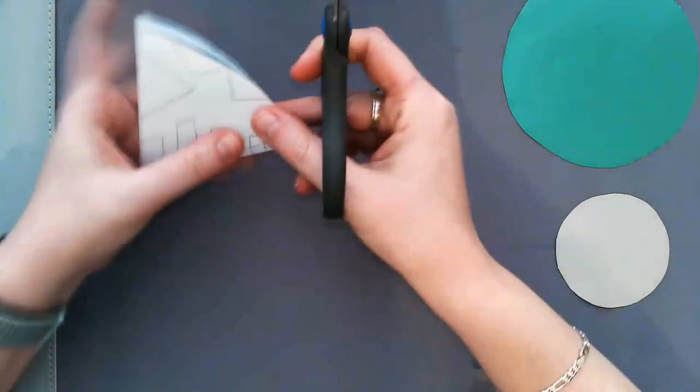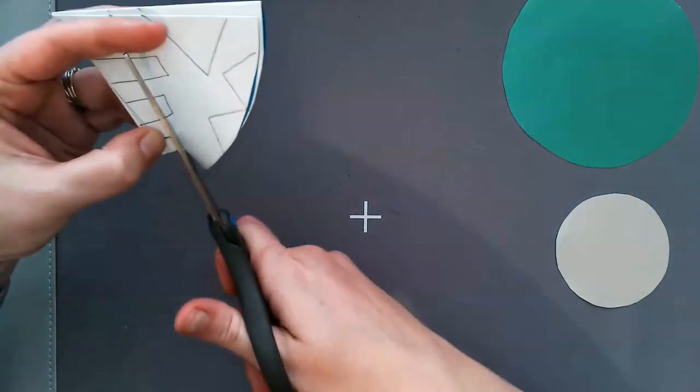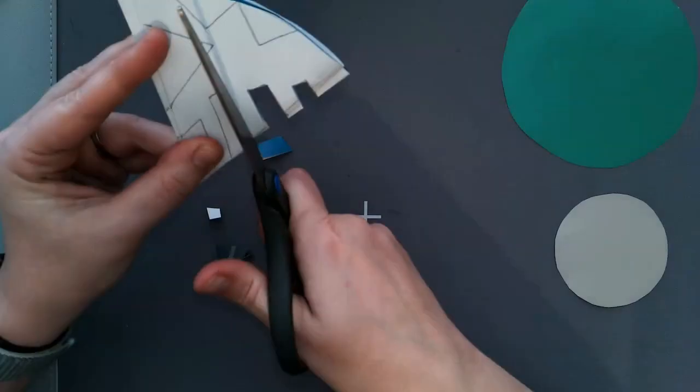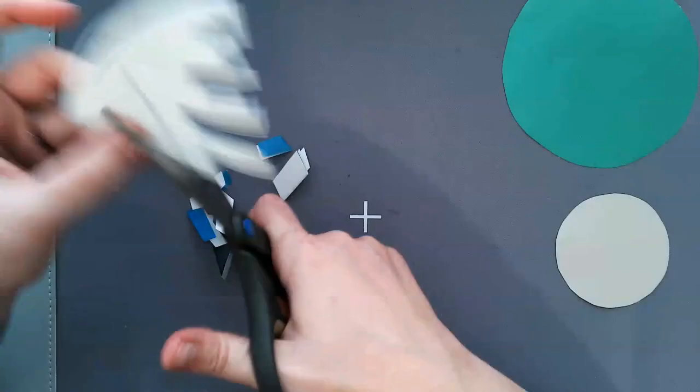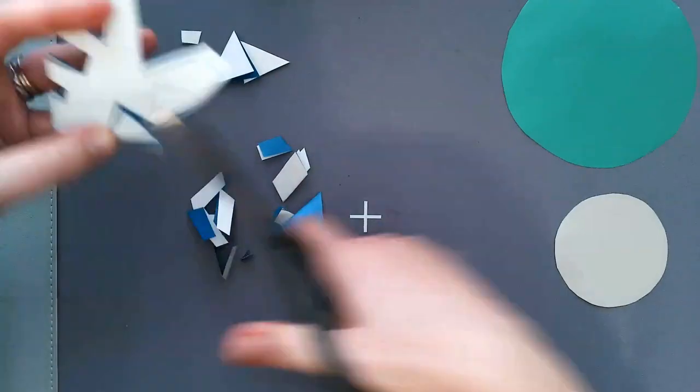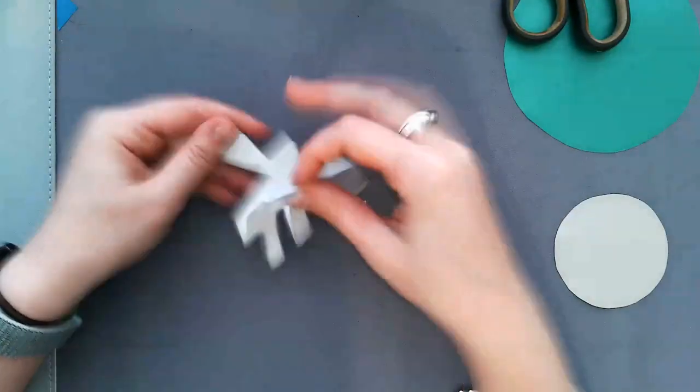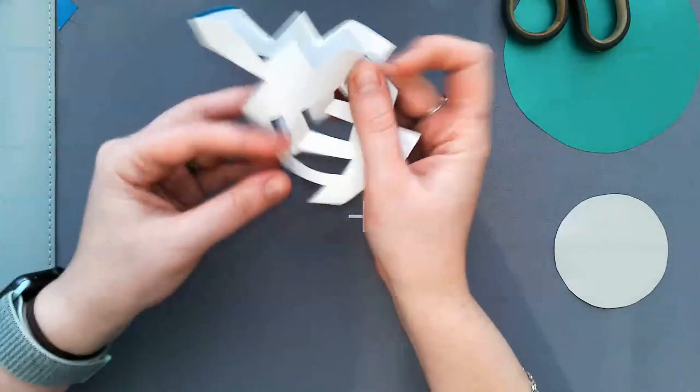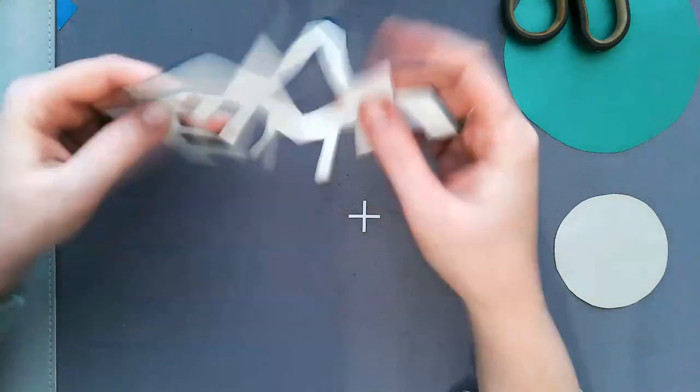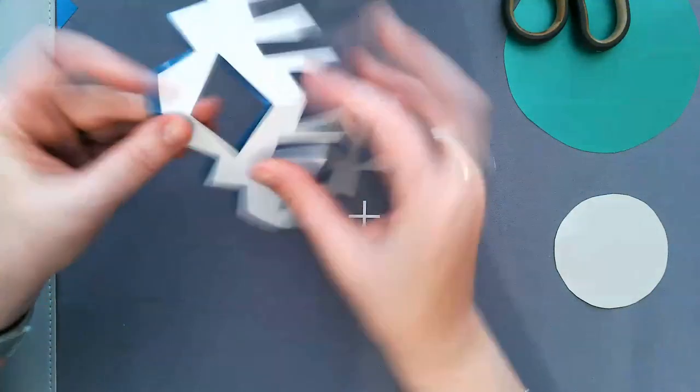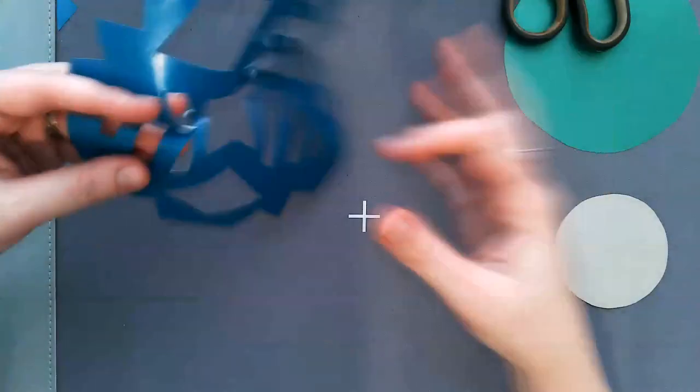And then we're just going to cut it out real quick. And then when you open it all up, as long as you didn't cut off a whole edge, you should have your intact finished paper snowflake.